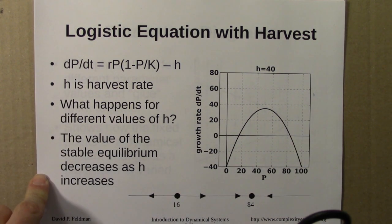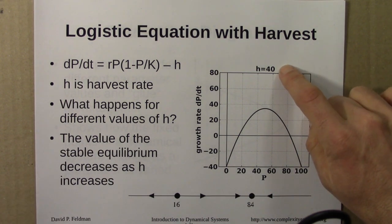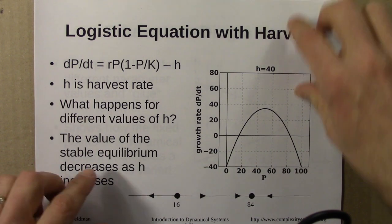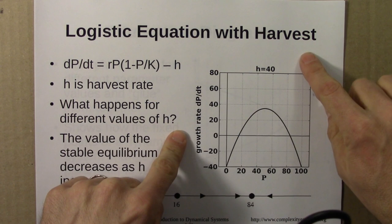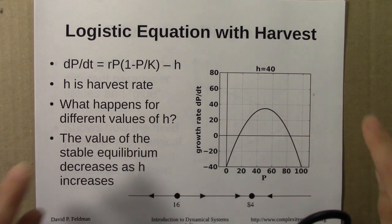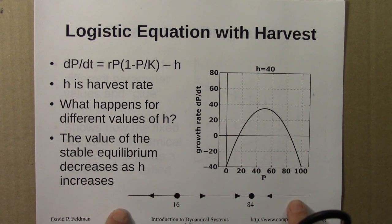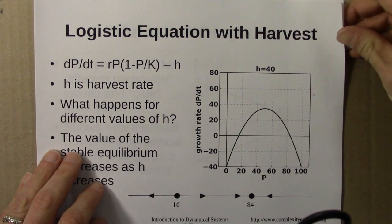We experimented with different h values—h=40, h=60, h=20, h=80—about a half dozen different values. For each experiment we drew a phase line. Then we combined all those phase lines into this construction called the bifurcation diagram.